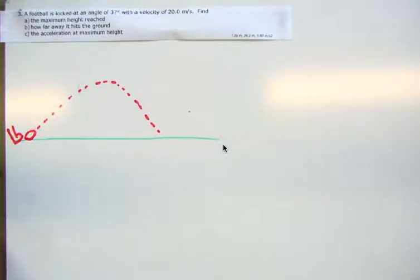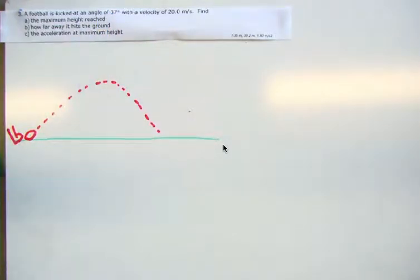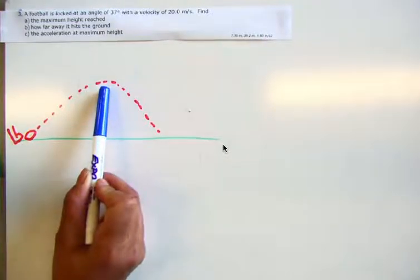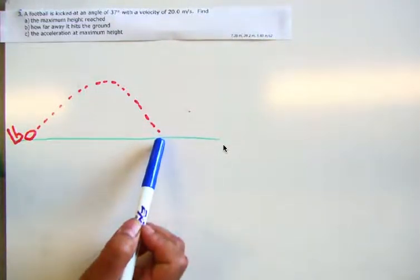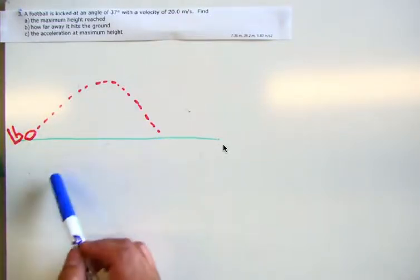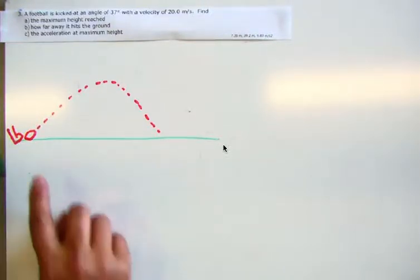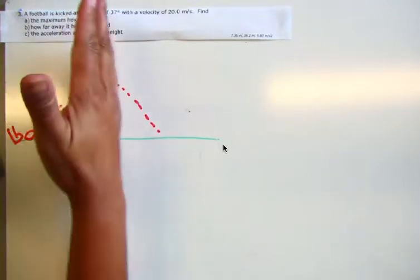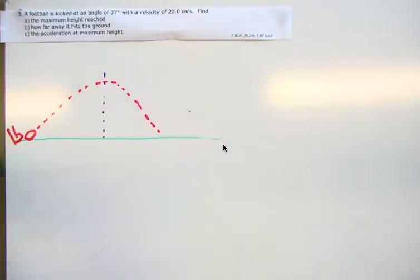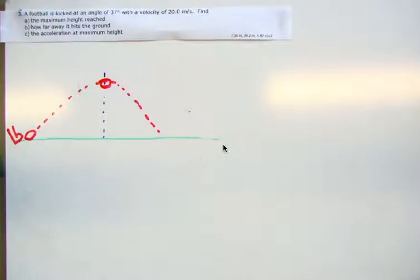There's actually two different things going on in this problem. One of them in part A is the maximum height reached. Where is the maximum height here? That, right? And how far away does it hit the ground? Where's that? There, right? So we're talking about kind of two sets of distances for the two different parts, A and B. So we could break it up any way we want, even though this ball starts here and goes all the way to here, we can just stop it halfway. We can just say, let's just look at it until it gets to its maximum height place because that's what we're interested in for part A.